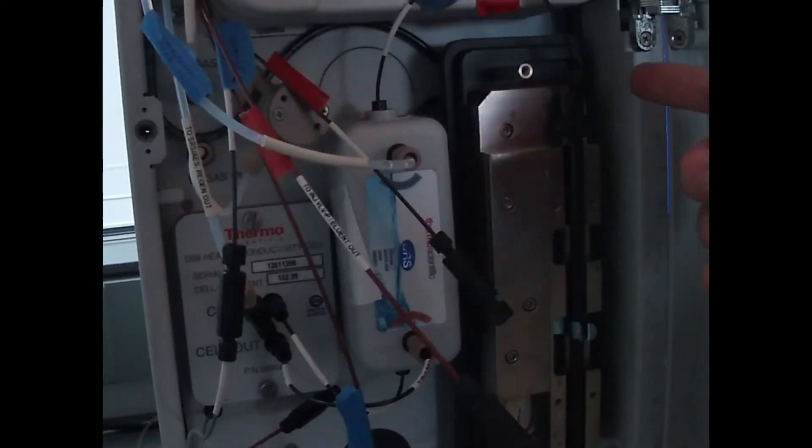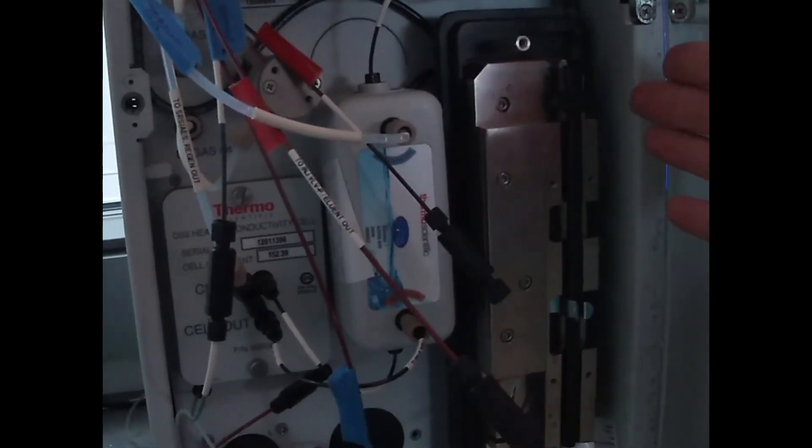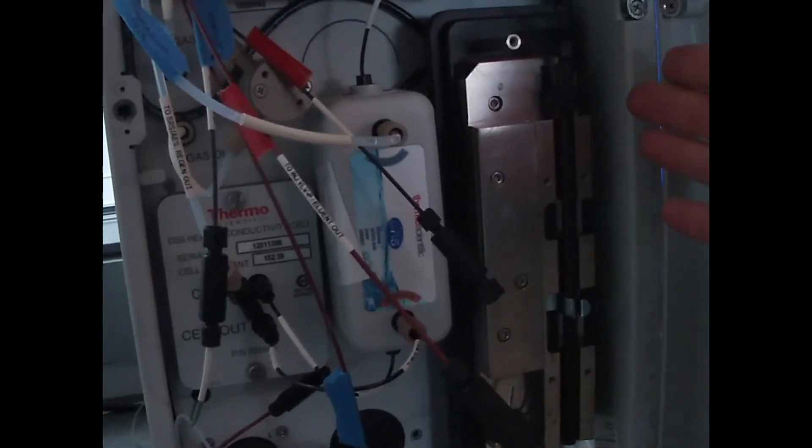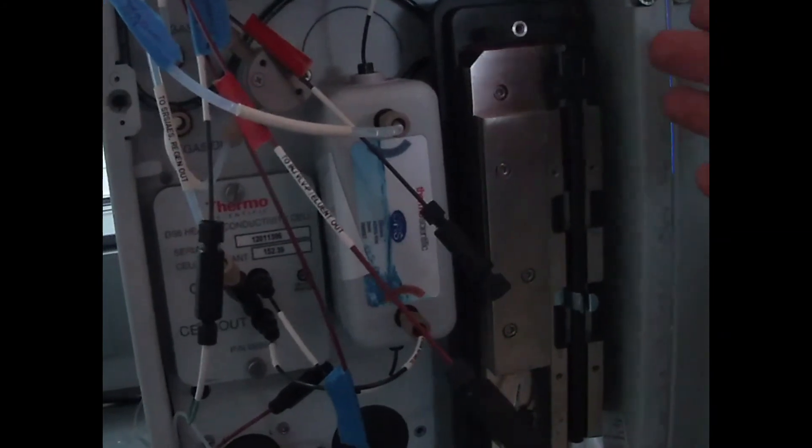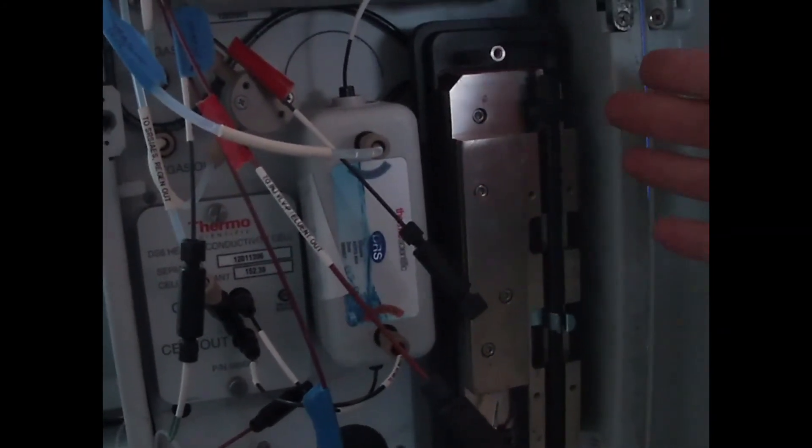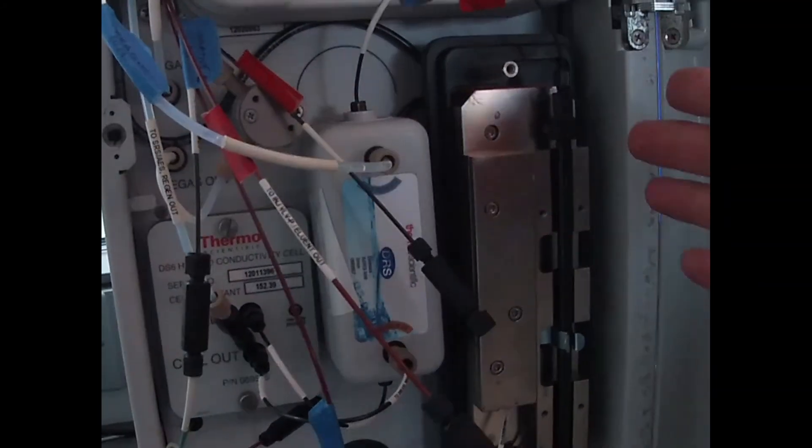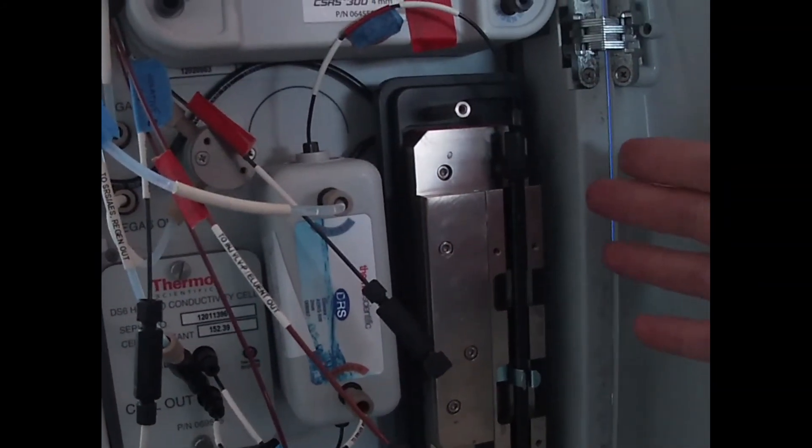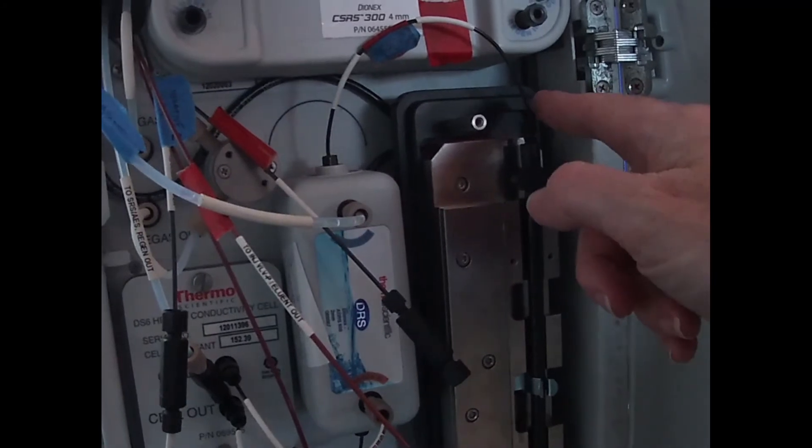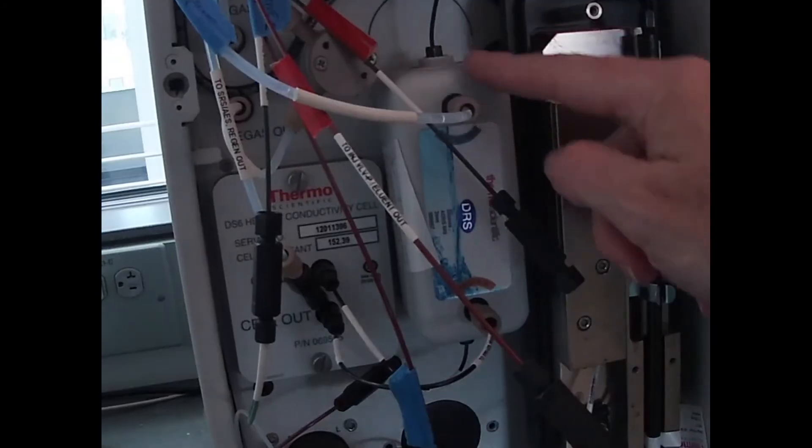So then the anions, say sulfate, would now be sulfuric acid, or nitrate would be nitric acid. Any phosphate coming through would be phosphoric. And so those remain highly conductive. They remain strong electrolytes so that they'll be detected readily by our conductivity detector.